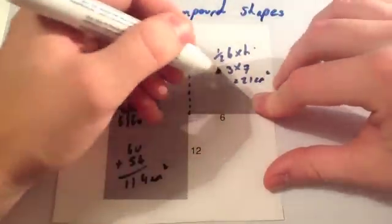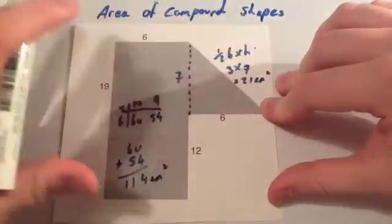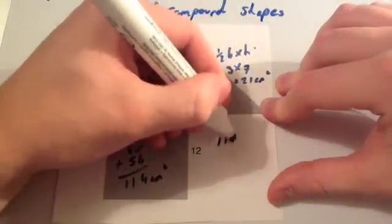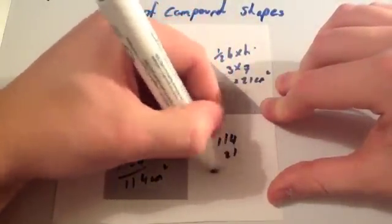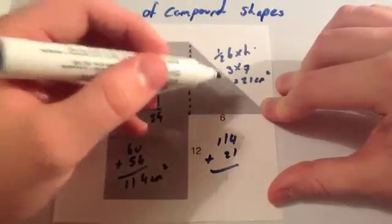The area of the triangle is 21 centimeters squared. So to find the area of this whole compound shape, we're going to do 114 plus 21. So we add together this area and add together this area.